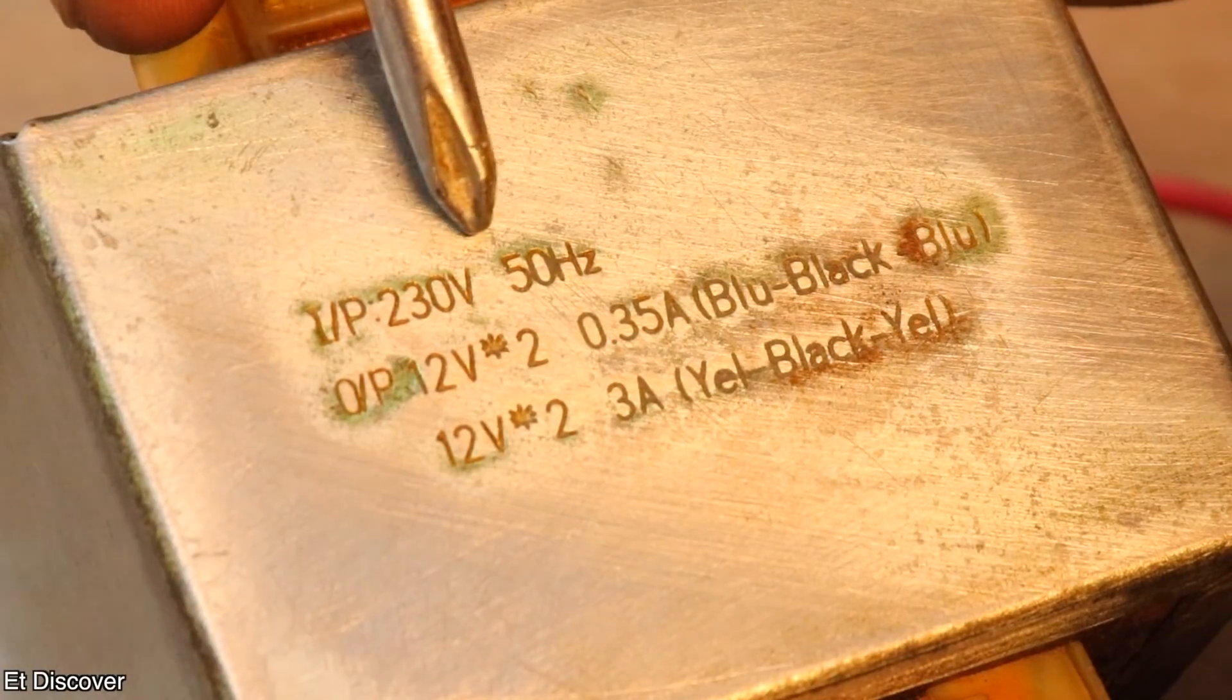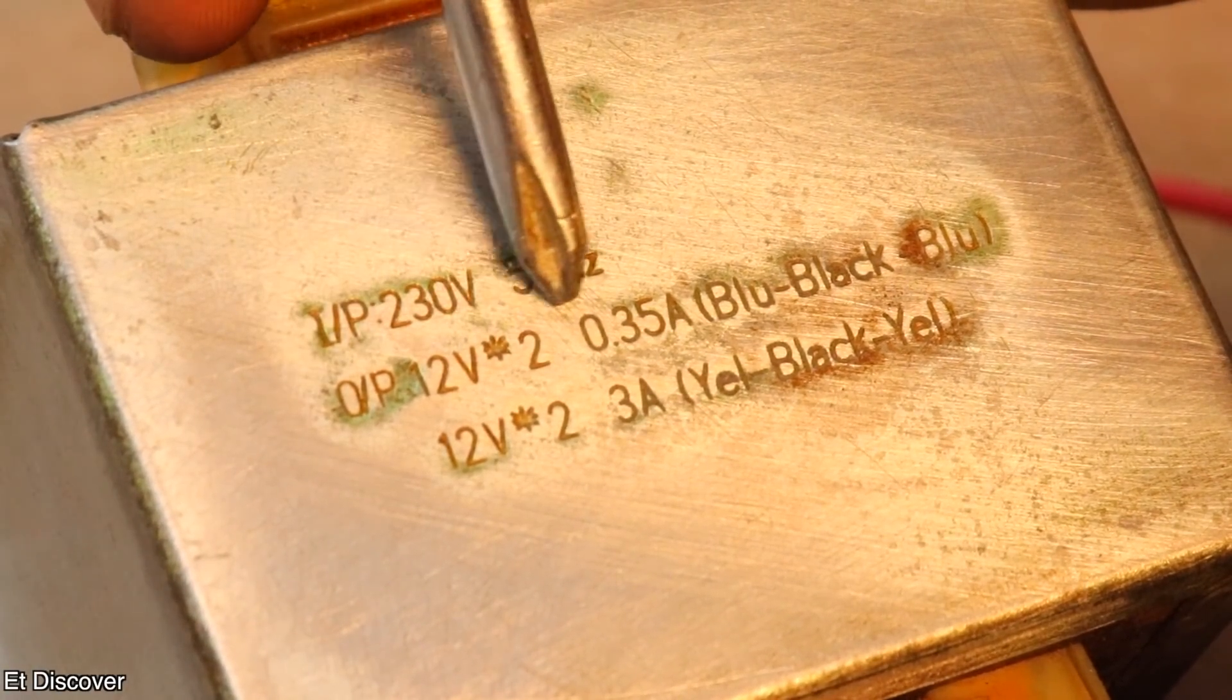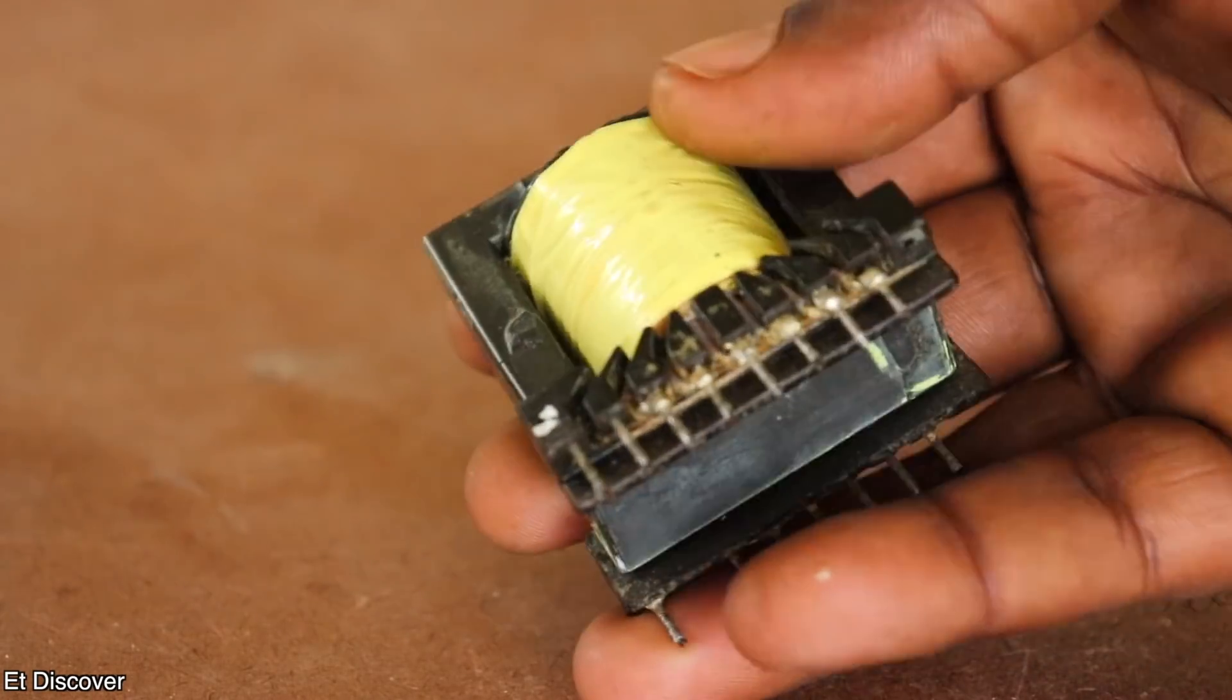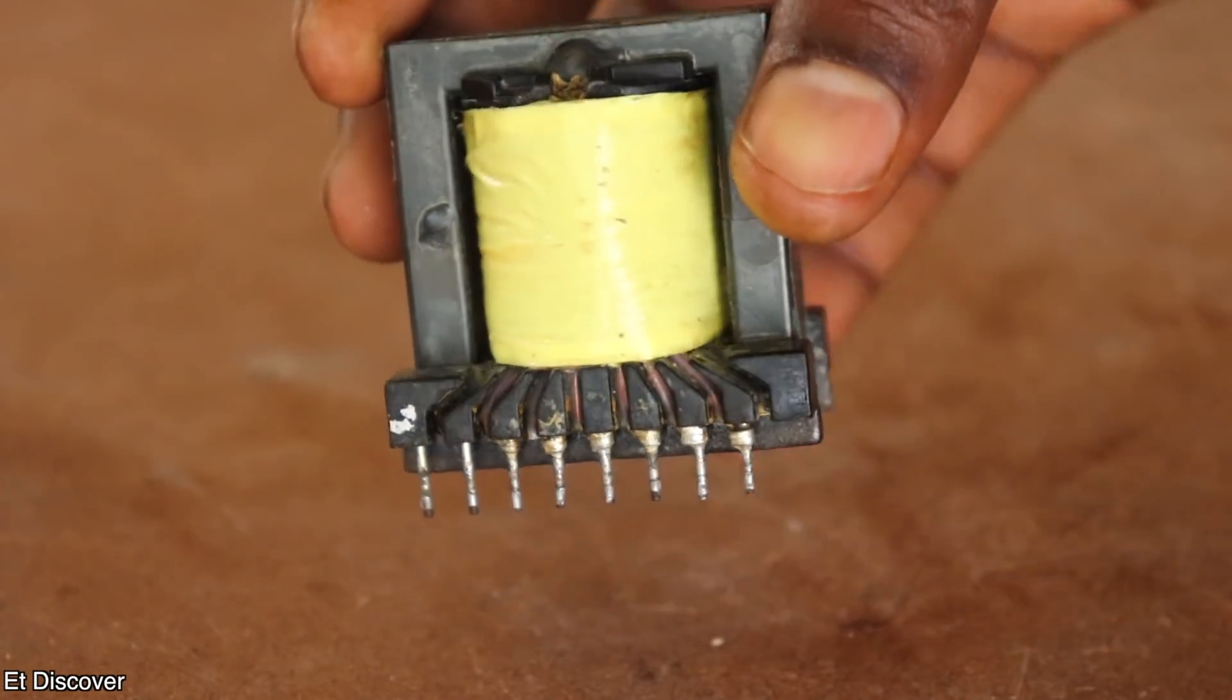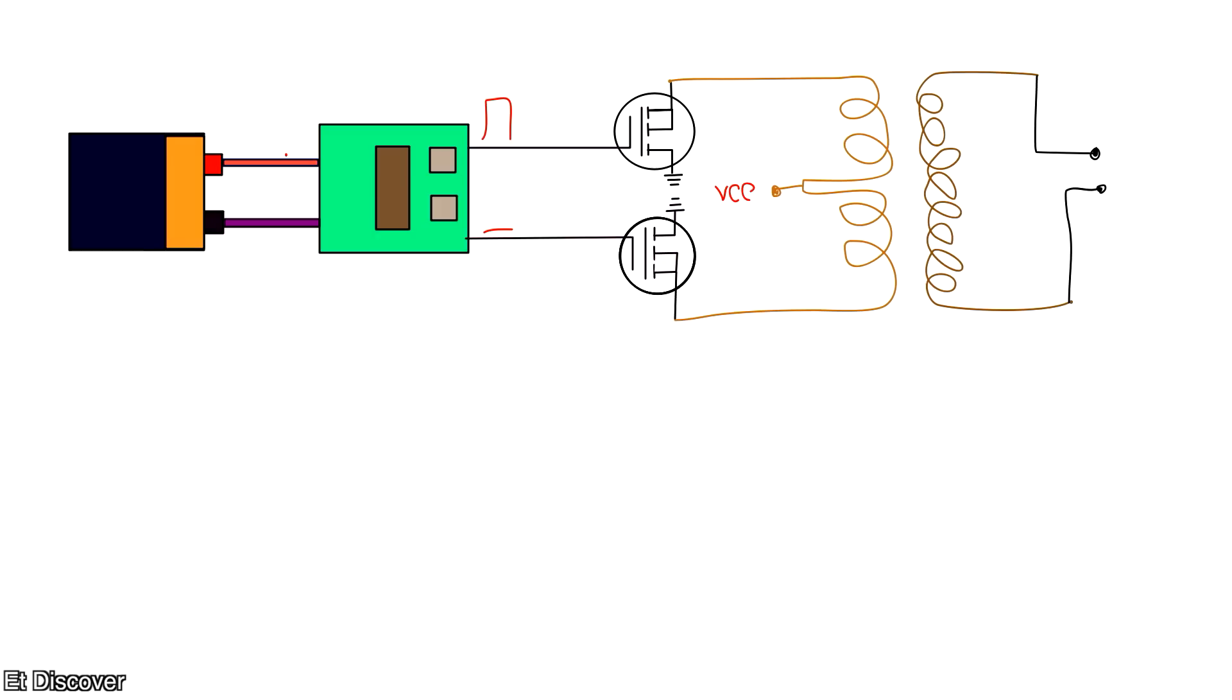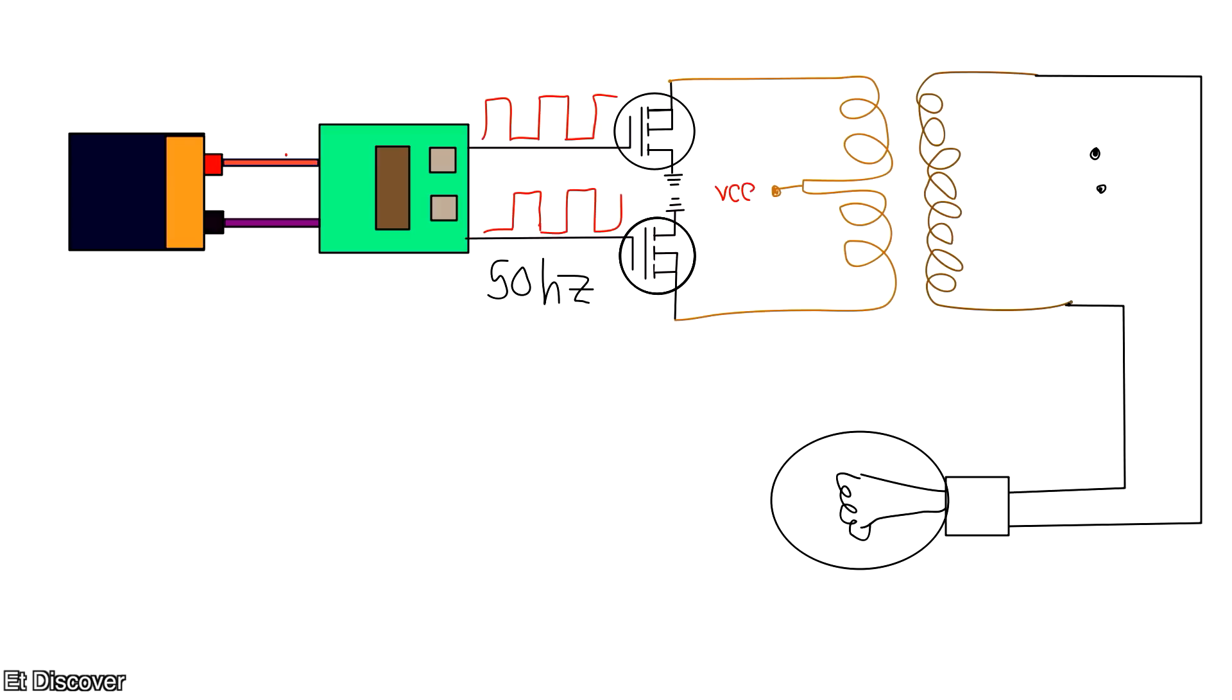In my case, this transformer needs 50 Hz signal. This is a low frequency inverter. But if I were to use this type of transformer, I would need 30 kHz signal to 90 kHz signal, which is called high frequency inverter. Next amplitude signal be supplied by MOSFET to the primary coil of the transformer. Right then, transformer secondary coil produce 220 AC voltage, which is enough to glow a filament bulb.